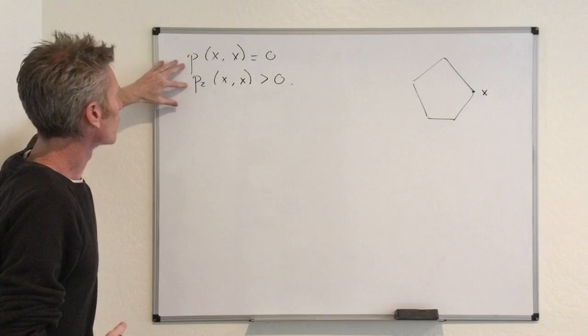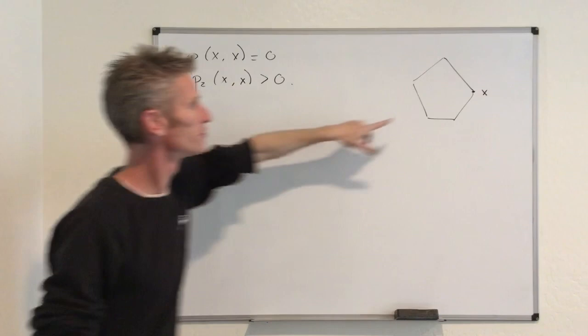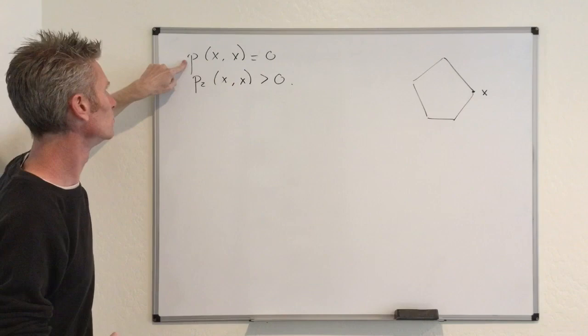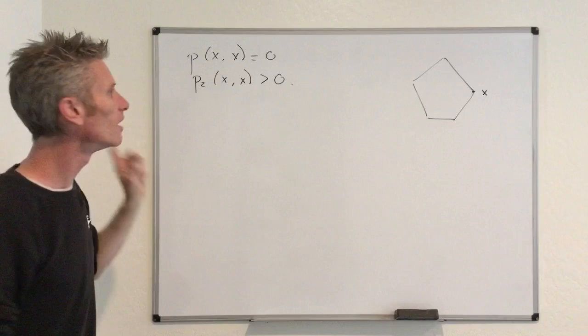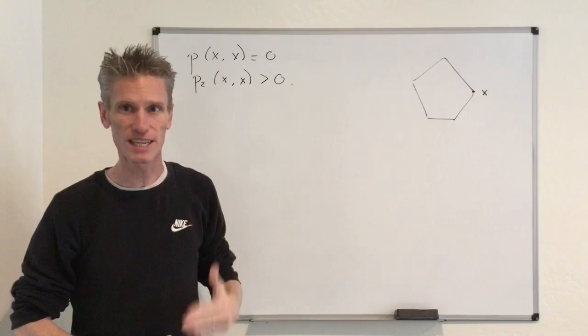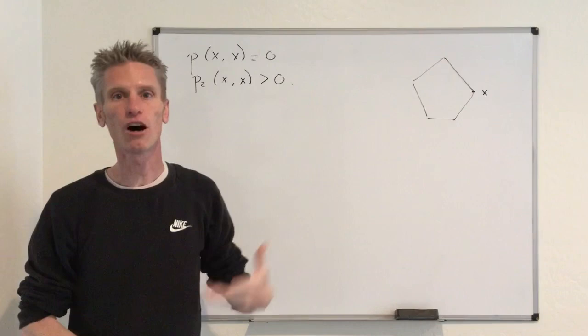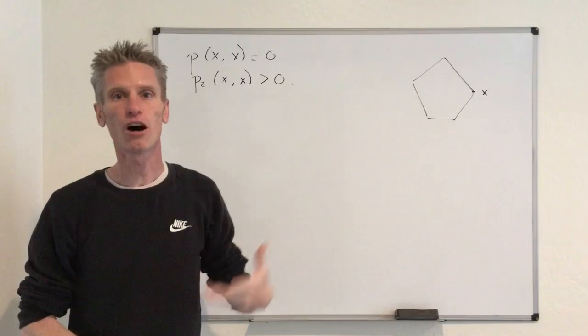From this it seems we want to deduce that the period of state X is going to be equal to two, because you cannot stay in state X in one time step but you go back in two steps. However, be very careful: the period is not equal to the minimum number of steps you need to return to your initial position. It is equal to the GCD of all the possible numbers of steps you need to return to your initial state. So from that, we cannot yet conclude that the period is equal to two.